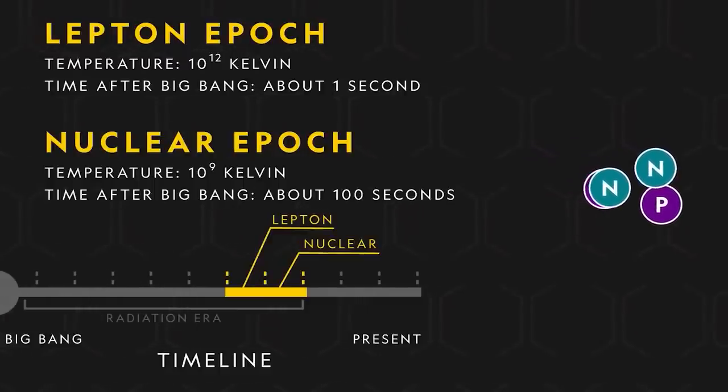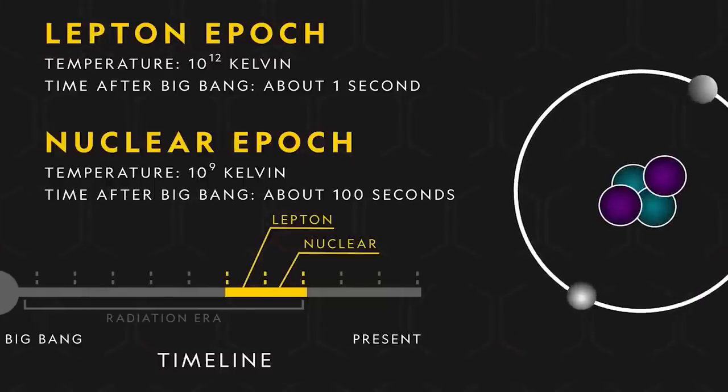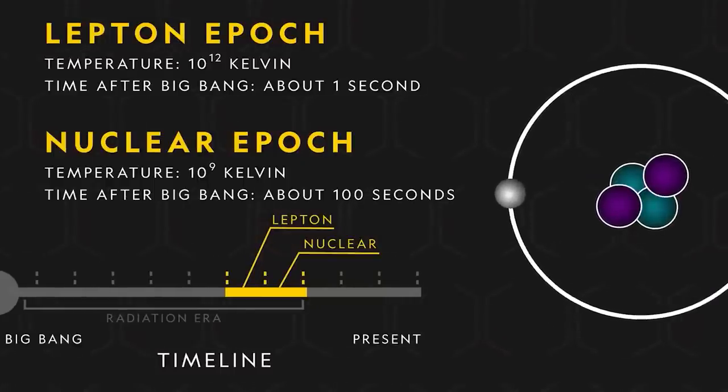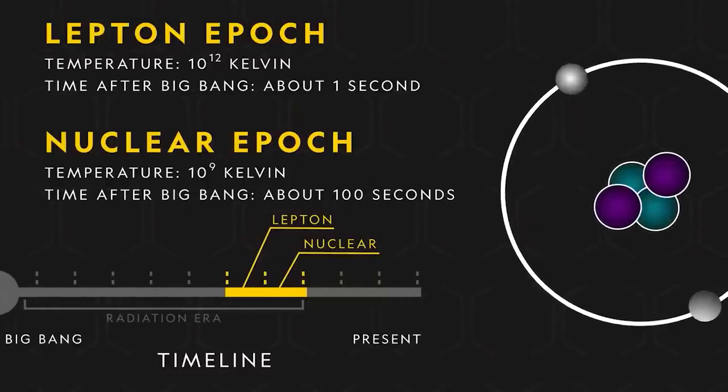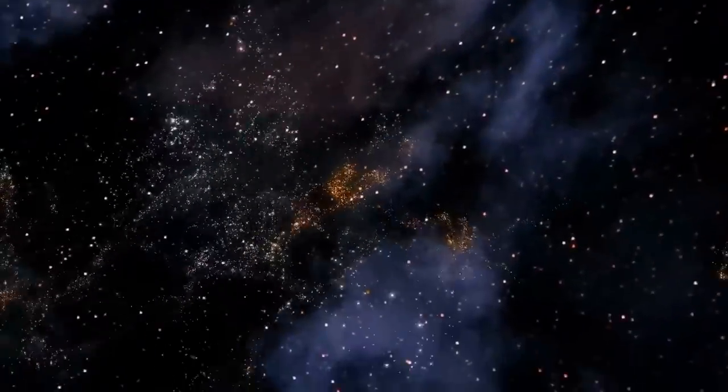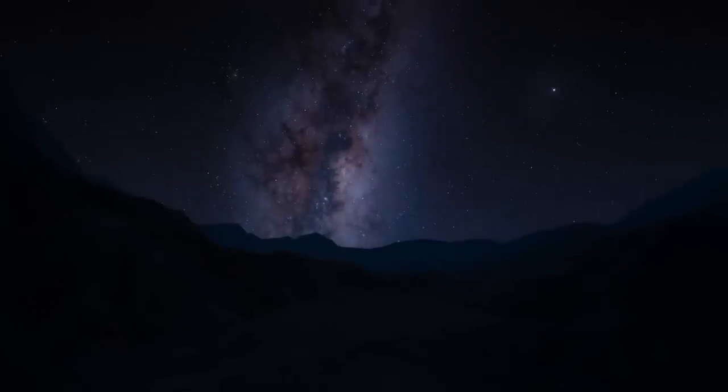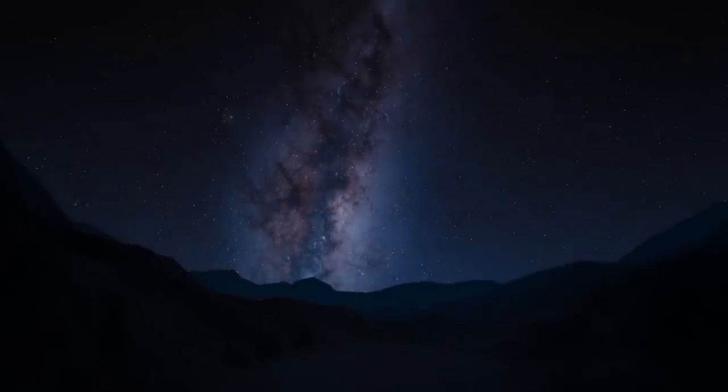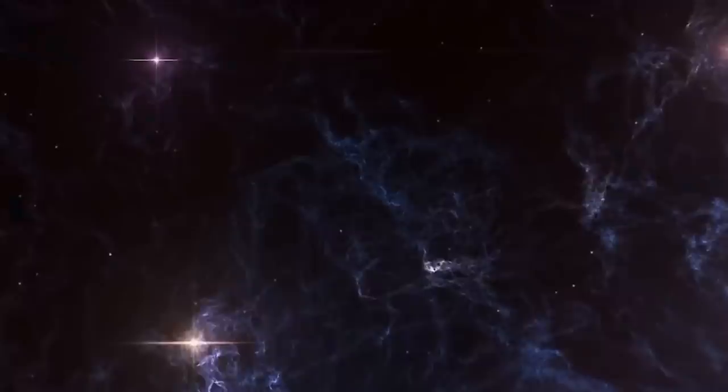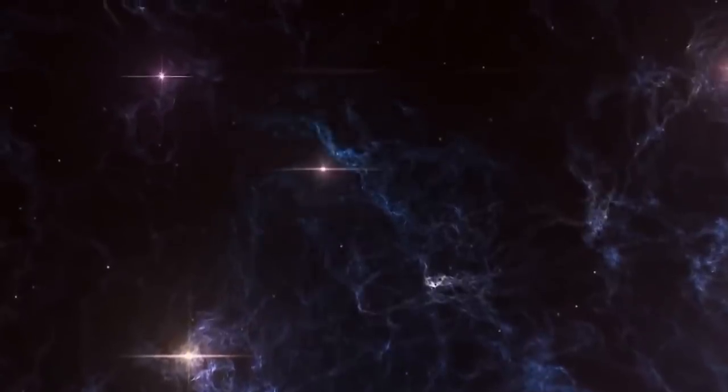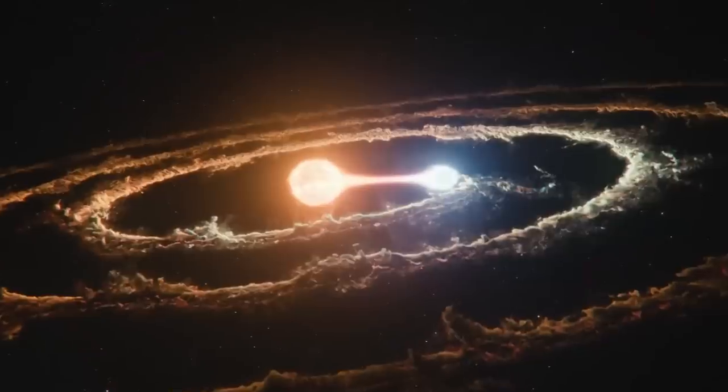In a few minutes they fuse and form hydrogen and helium nuclei. 300,000 years later, these nuclei capture electrons to form atoms. The universe is then filled with clouds of hydrogen and helium. The photons now move freely. This marks the beginning of the transparent universe.